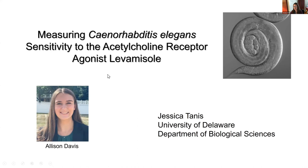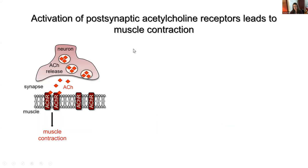First, I'd like to thank Allison Davis, an undergraduate in my lab, who wrote and recorded this protocol with me. Acetylcholine is released from motor neurons, and this activates postsynaptic ionotropic acetylcholine receptors. This results in an electrical signal that leads to muscle contraction. And in humans, disruption of cholinergic signaling results in myasthenic syndromes.